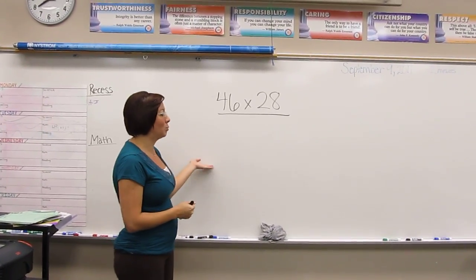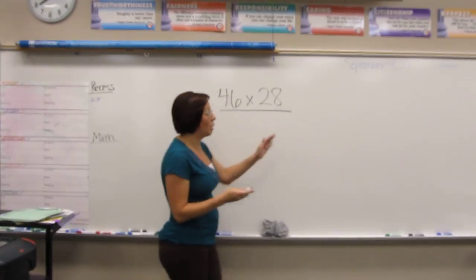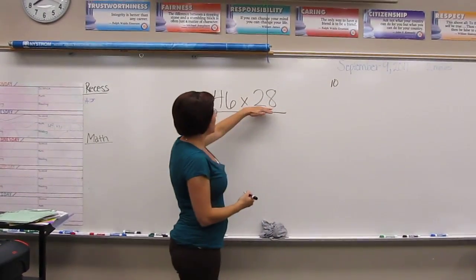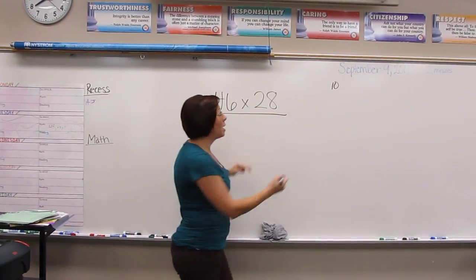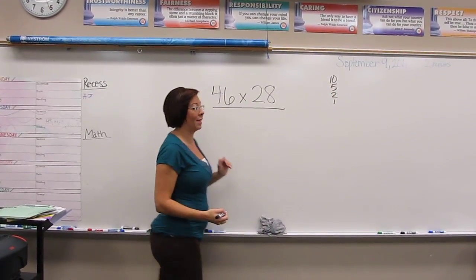This is a multiplication problem that I'm going to demonstrate how we've been doing in class. The first thing to remember is that we're always going to start by keeping one of our numbers and breaking down the other one into 10, 5, 2, and 1. I'll explain what that looks like in just a minute.